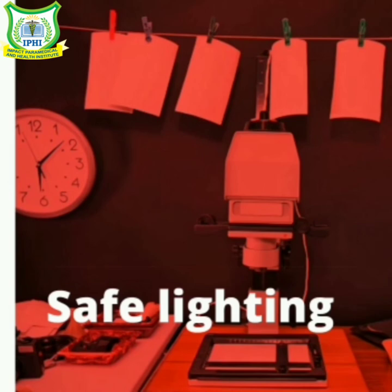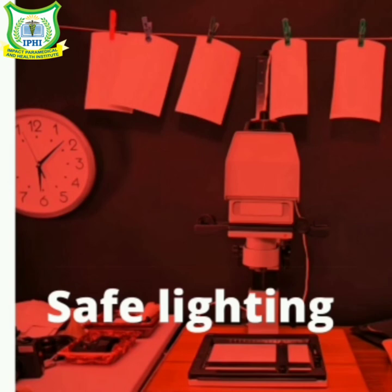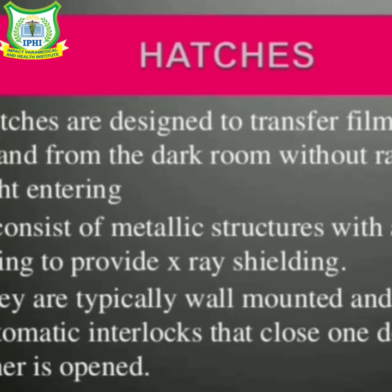Now we will discuss about the lighting system and hatches used in a dark room. There are two kinds of lighting: the visible light and the safe light. The visible light is used for inspection and maintenance of cassettes and screens, cleaning of work surfaces, servicing of equipment, and is perfectly centrally placed.